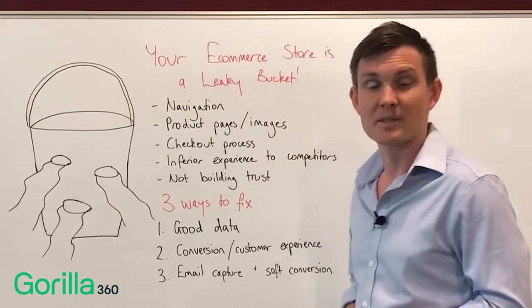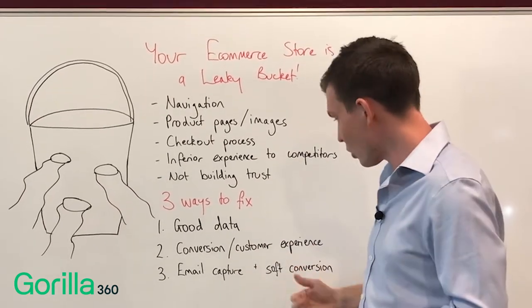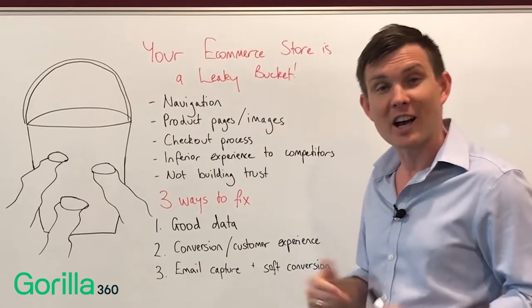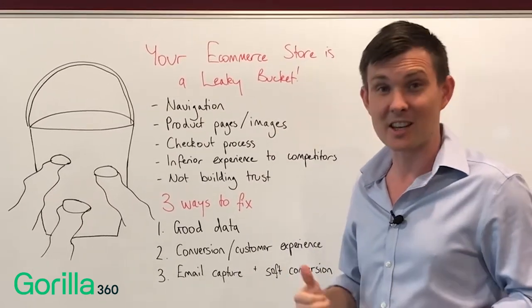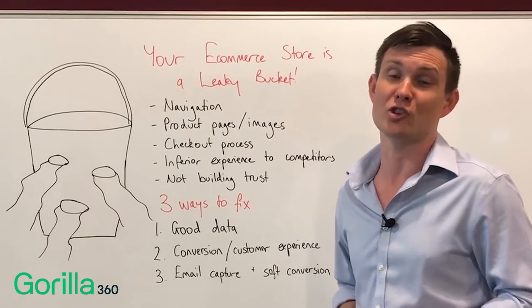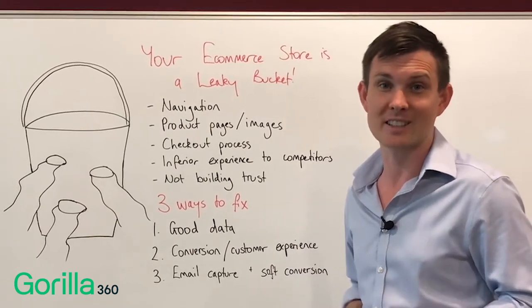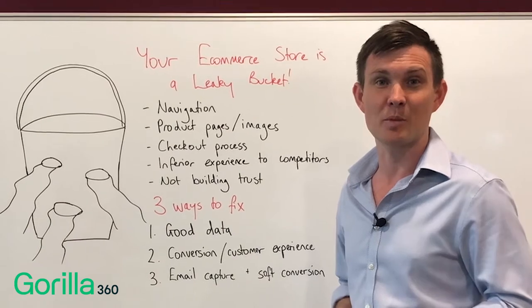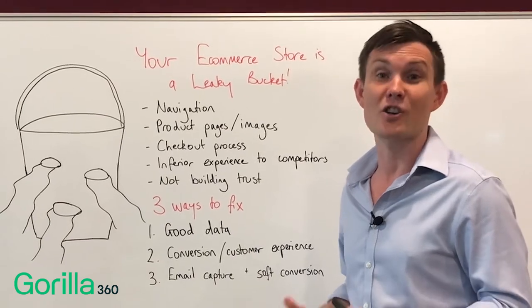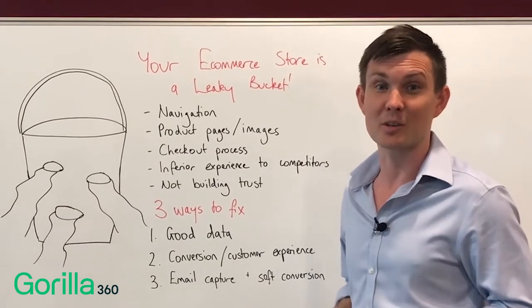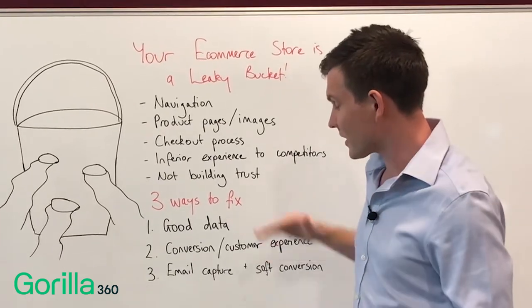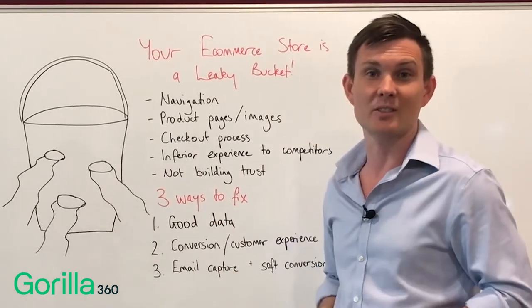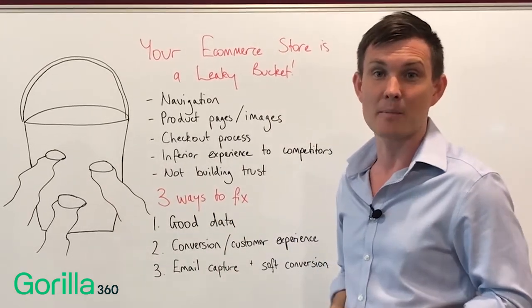The third thing is email capture — what we call soft conversion. If you can't get a sale from a customer, the second best thing you can do is capture their email address or contact details so that you can keep building a relationship and encourage them to come back and complete that first sale. So those are three quick ways you can start plugging some of these leaks. Good luck!